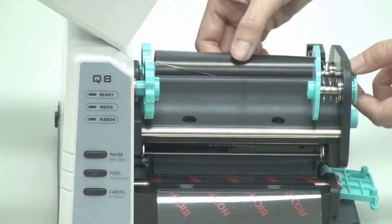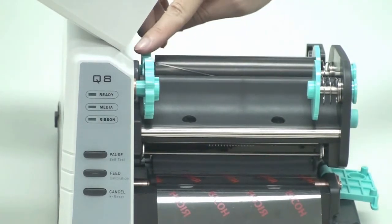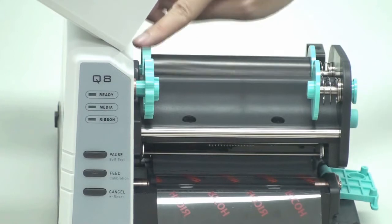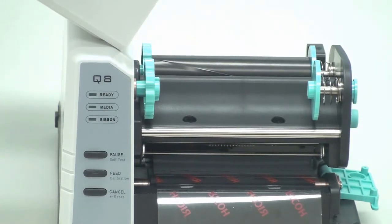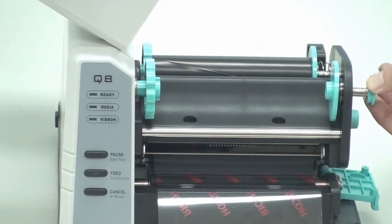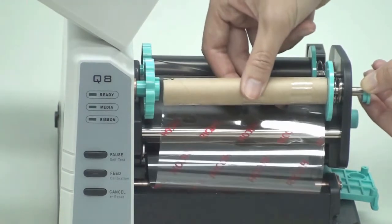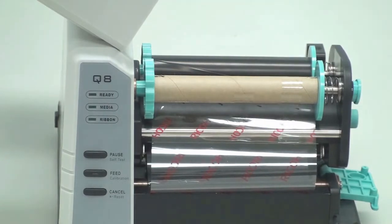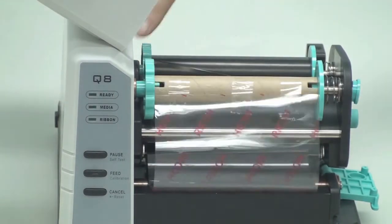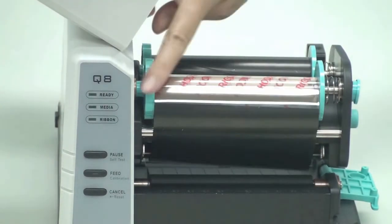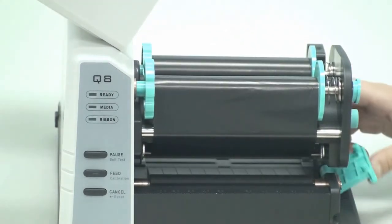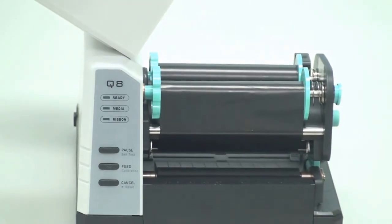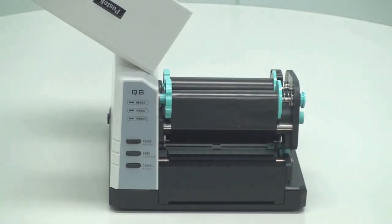Adjust the left ribbon mount backwards to smooth the ribbon. Load the empty core onto the ribbon take-up area in the same way. And to complete the process, tighten and smooth the ribbon by turning the left ribbon mount backwards. Flip up the printhead module plate to the closed position. The ribbon is now loaded.